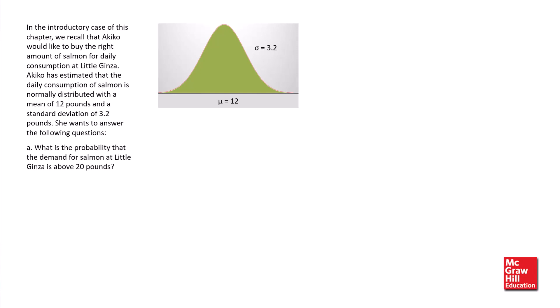What is the probability that the demand for salmon at Little Ginza is above 20 pounds? This distribution shows the area of interest, which is the area that x is greater than 20. To obtain the probability, we can use the Excel function NORM.DIST with four arguments,